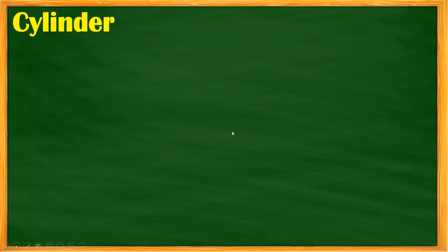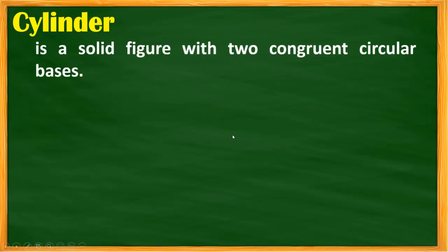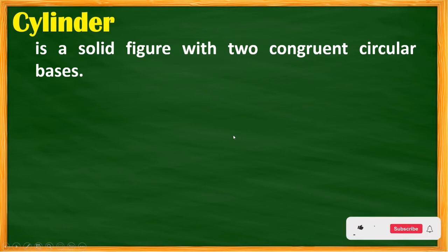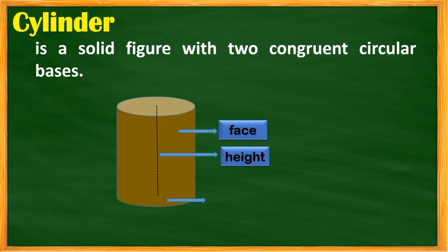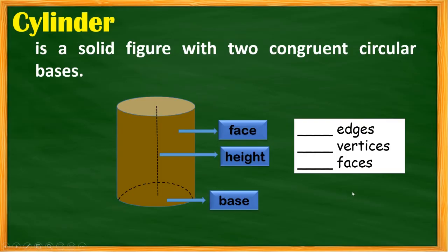Now let's proceed to the cylinder. A cylinder is a solid figure with two congruent circular bases. It has a circular base, height, and a curved surface. The cylinder has 0 edges and 0 vertices — because there is no intersection of edges. It has 3 faces.